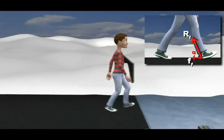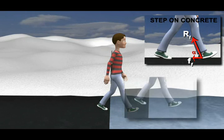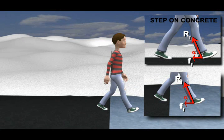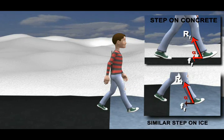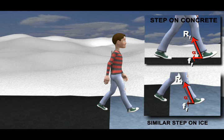Now, if he keeps the angle of his front leg the same and walks on ice or any other surface with low friction coefficient, the low frictional force fails to provide the horizontal component of the reaction force exerted by earth. Hence, the person slips.